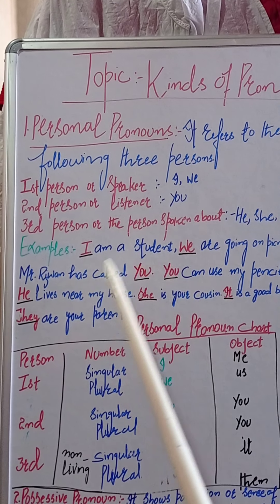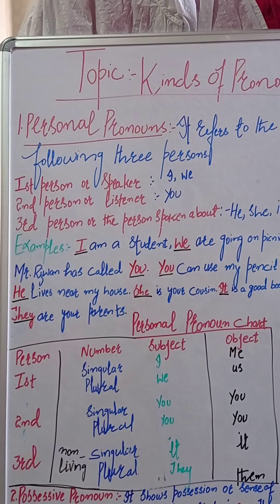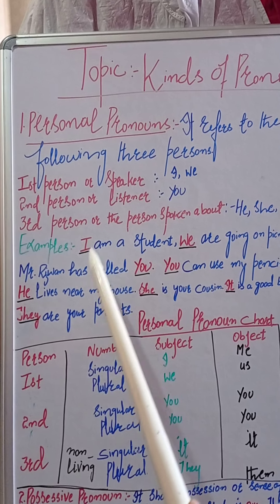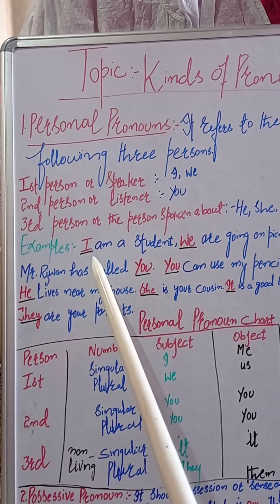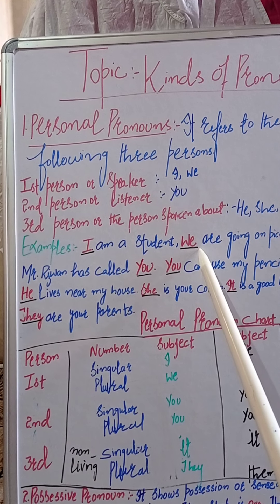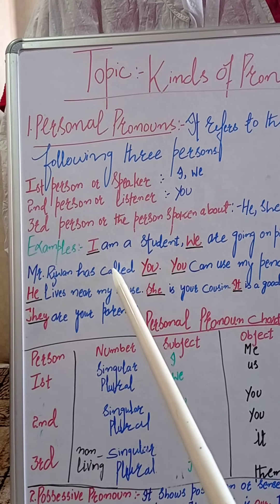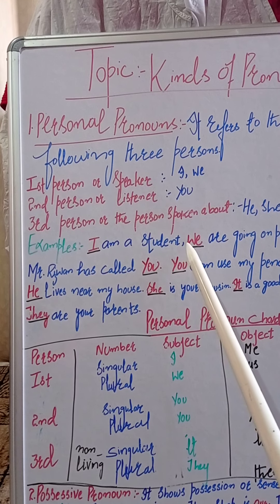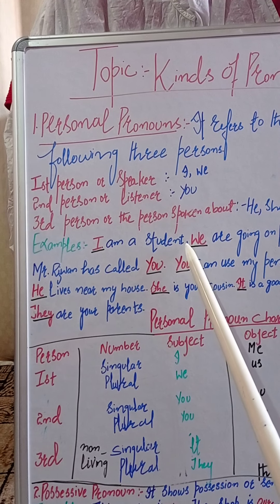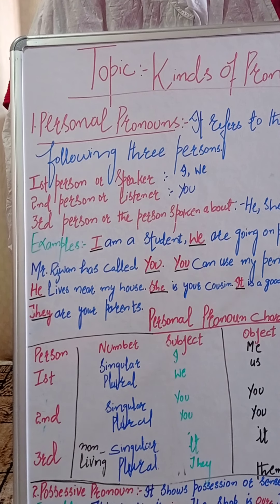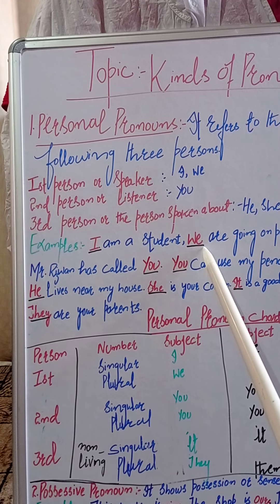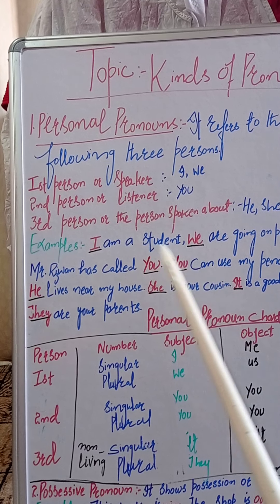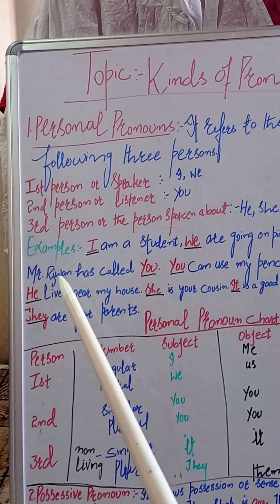For example: 'We are going on a picnic' — first person I/we. یہاں پر یہ بول رہا ہے، 'میں ایک student ہوں، ہم picnic پے جا رہے ہیں' — یہ کیا ہے؟ بولنے والے، right? Speaker — first person.